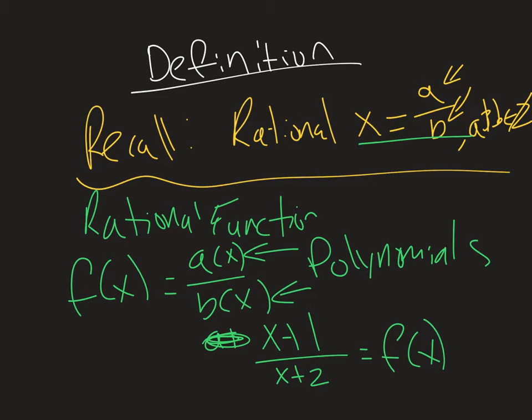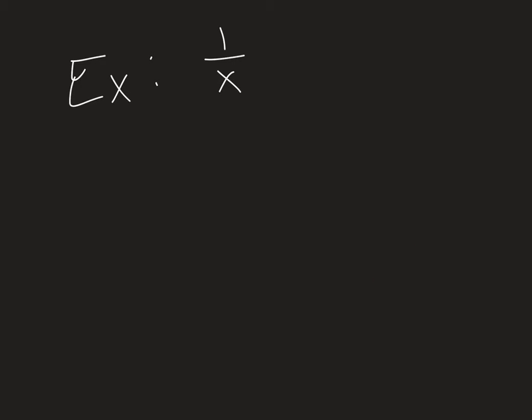So this is the definition and how it's going to work. Now we're going to talk about the base case. Let's look at our stereotypical example: y equals 1 over x. We have technically two monomials, but it fits the definition. In this case, a(x) is 1 and b(x) is x.